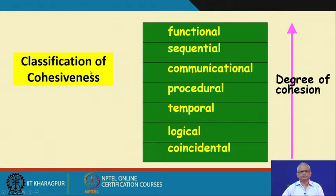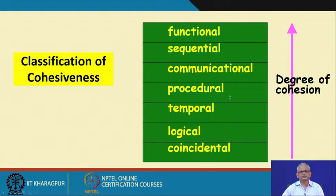Let us look at cohesiveness. The cohesion existing in a module can be classified into seven types: coincidental, logical, temporal, procedural, communicational, sequential, and functional. The worst form of cohesion is coincidental. You can examine a module and tell where in this spectrum its cohesion lies — whether it is coincidental (a bad form), or temporal/procedural (middle order), or functional (the best form).